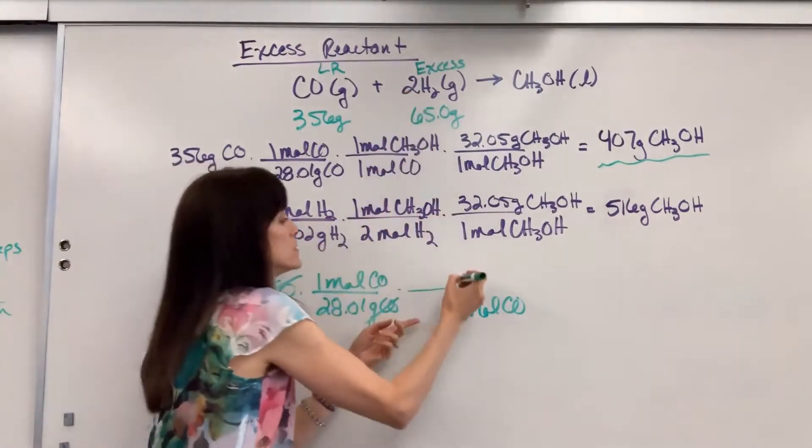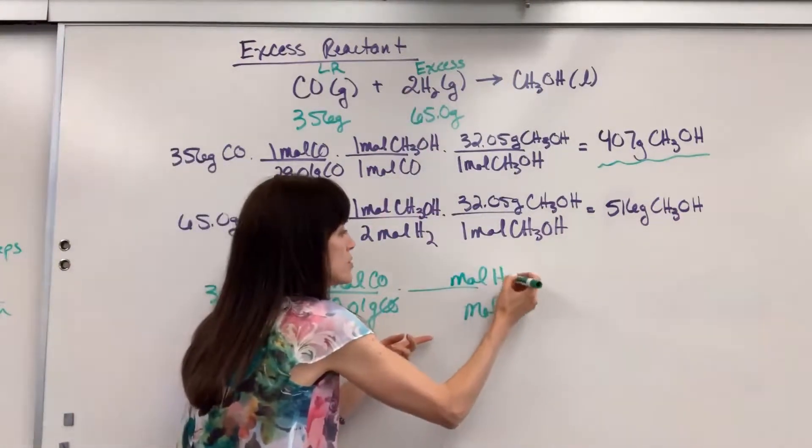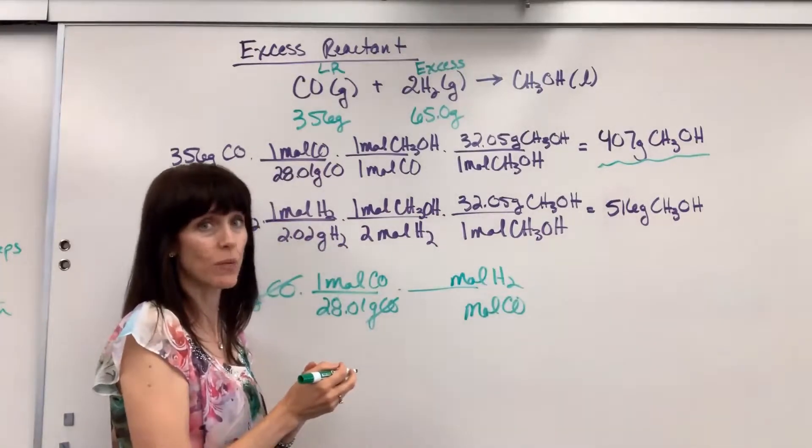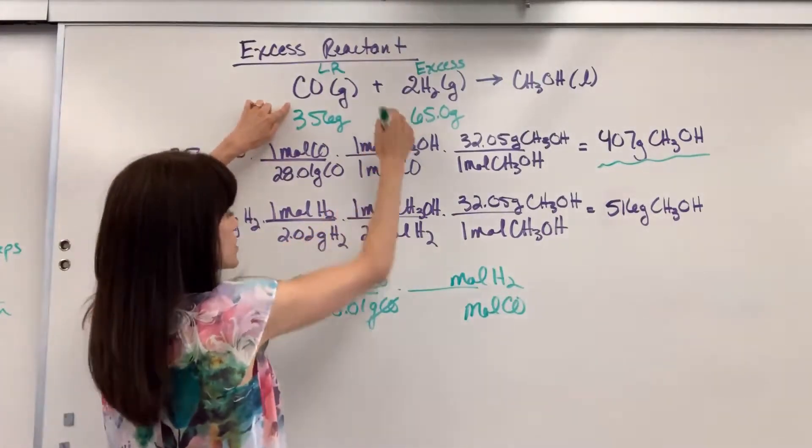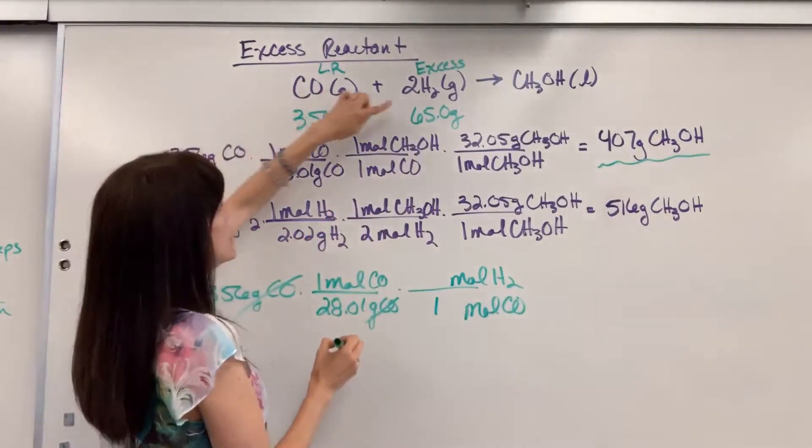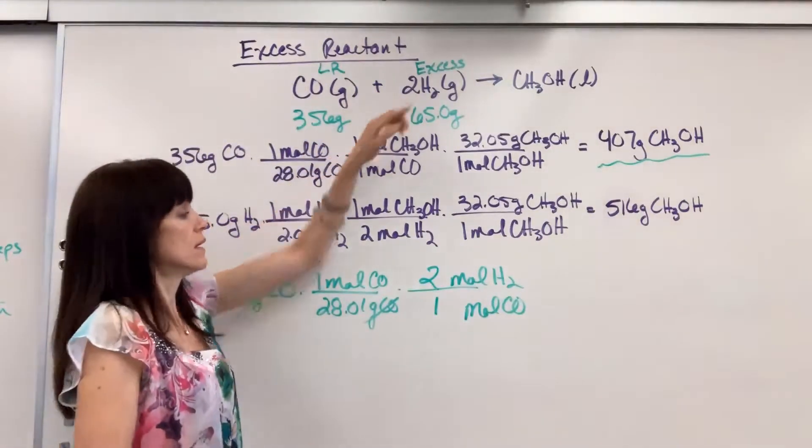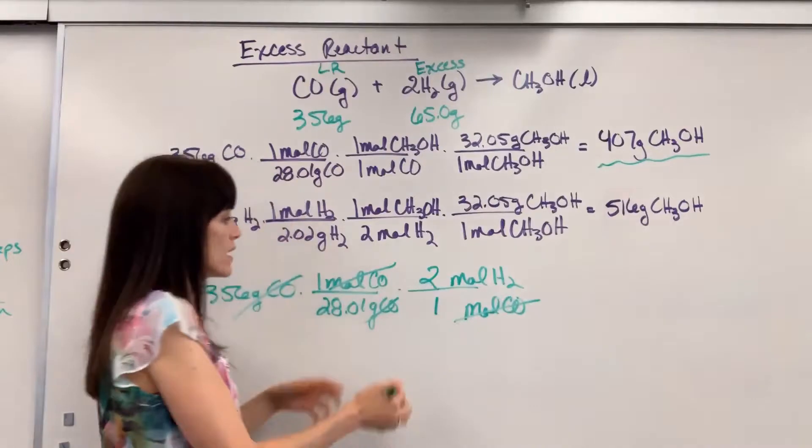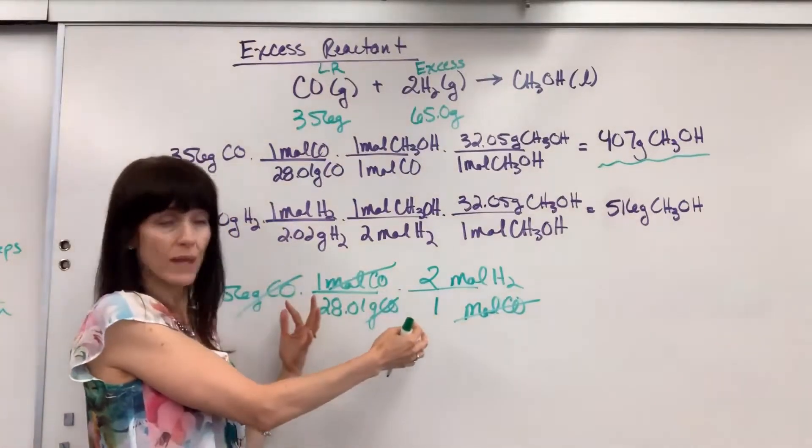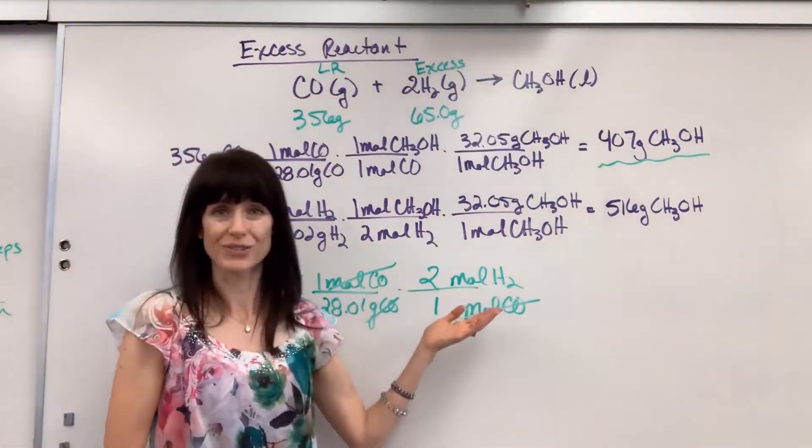And then we're going to put the moles of hydrogen in the numerator. That's what I want. Now you just look at those coefficients. One mole of CO is going to react with two moles of hydrogen. Stop right there. I noticed that the moles of CO cancel. I would end with moles of hydrogen.